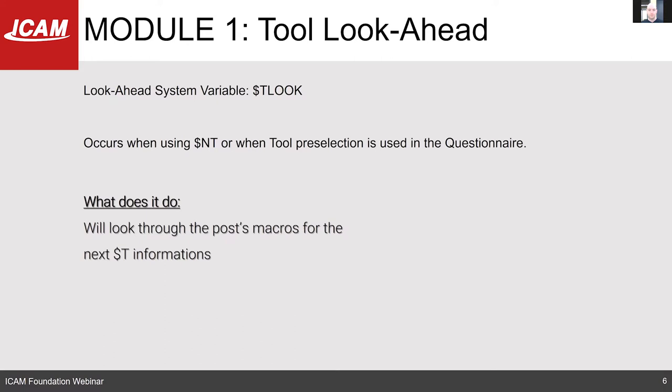The next lookahead that normally occurs is the tool lookahead, because you'll have a load tool afterwards. That lookahead is on $Tlook. At any point during any of the lookaheads, you can put a conditional test so that if the system variable for the lookahead is active and true, you can do specific actions — for example, to store information, change behavior, or activate a variable.